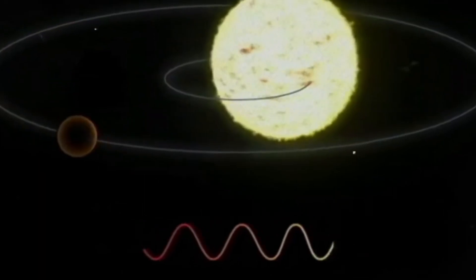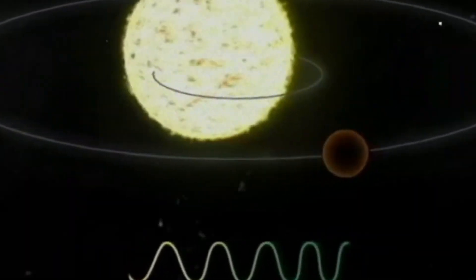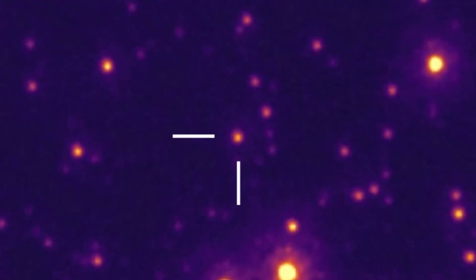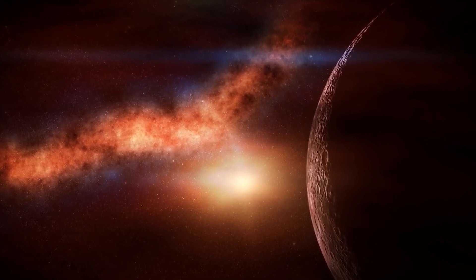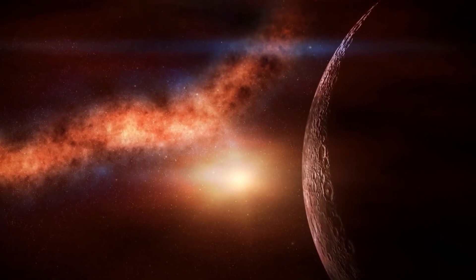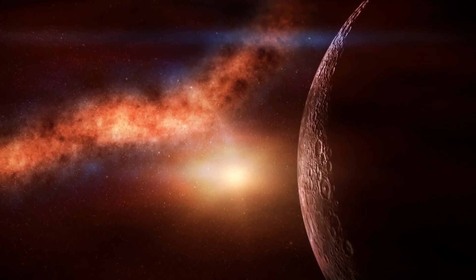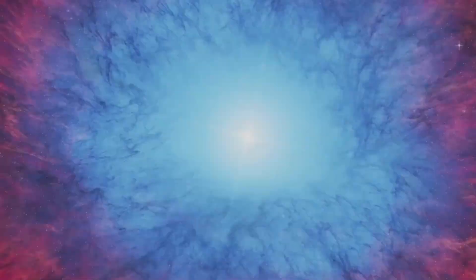When a star or planetary system passes in front of a more distant star, its gravity bends and amplifies the background star's light, acting as a natural magnifying glass that reveals hidden planets and other celestial bodies.